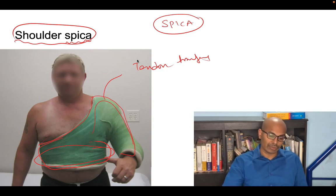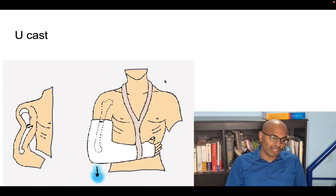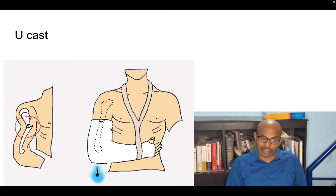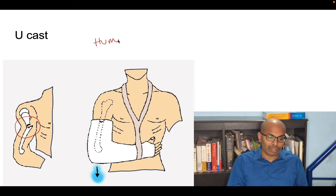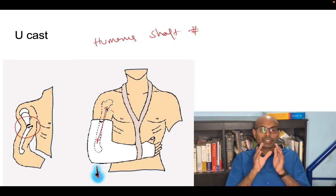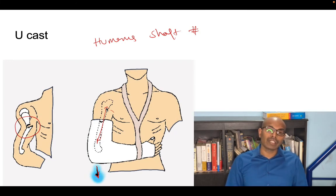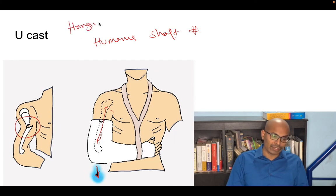The U-cast, also called the hanging cast, is still frequently used. It is applied for humerus shaft fractures — not for any other fractures. The weight and gravity align the humerus in its anatomical position, facilitating healing. This is one of the most commonly asked questions in NEET PG exams.